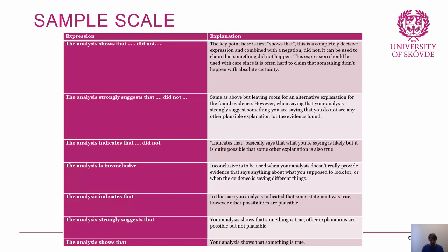For example, if someone downloaded child pornography to a computer and then erased it all, when you examine it and don't find it, you can confirm the computer is not currently storing child pornography — but it does not mean it hasn't stored it in the past. Similarly, with the common question of whether a computer has been remote controlled, even the most thorough analysis may only show no traces of remote control, which implies but does not prove the computer was never remote controlled.